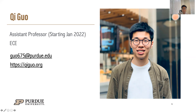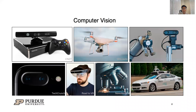Hi, my name is Qi Guo. I will join Purdue ECE as an assistant professor starting in January 2022. I build computer vision systems that recover scene information from the environment. These systems have broad applications nowadays.